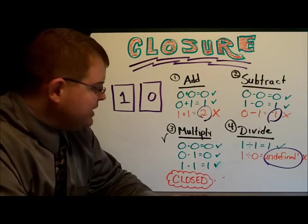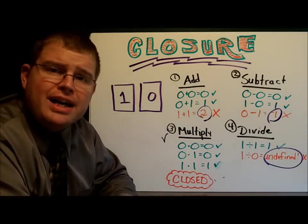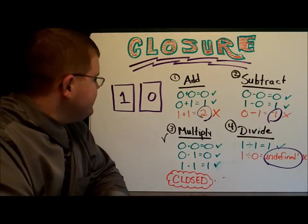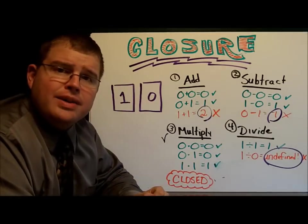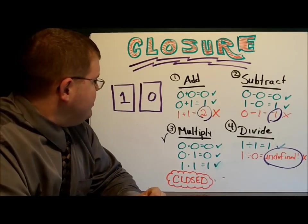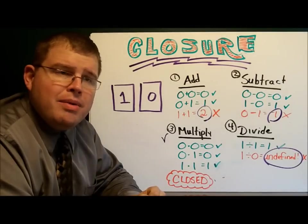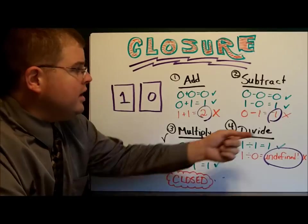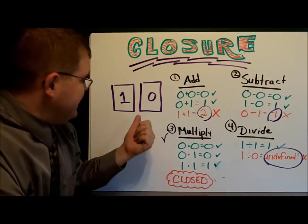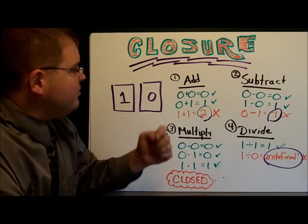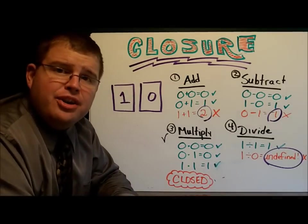But let's try another one. Let's try subtraction. Let's use these numbers. Zero minus zero is zero. One minus one is zero. Zero minus one? Oh, that's negative one. That doesn't work. That's not in here. Well, it looks like you won that round, too.